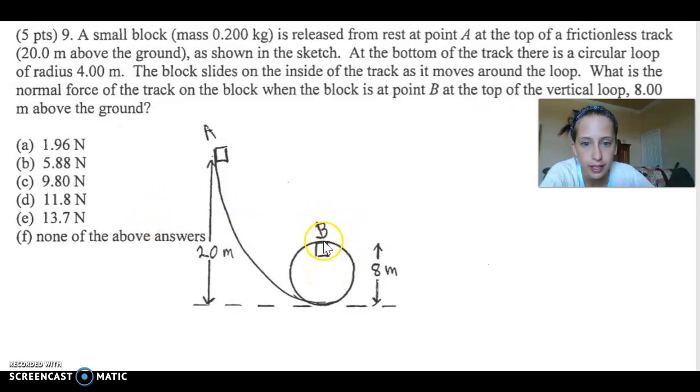So if we do a little free body diagram here, we've got our normal force pushing down because it comes from the surface. We've got our gravity also pushing down. Then we have our centripetal force holding us up. So we need to find the centripetal force, subtract the gravity, and what's left is the normal force.